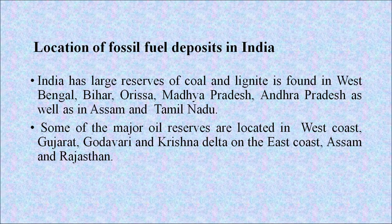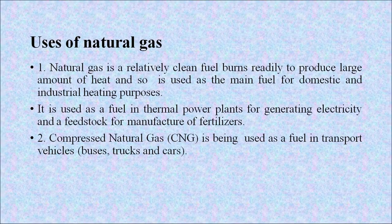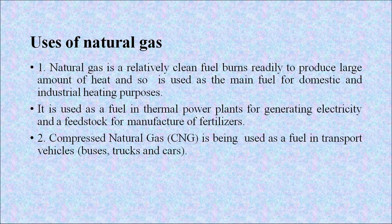Location of fossil fuel deposits in India: India has large reserves of coal and lignite found in West Bengal, Bihar, Odisha, Madhya Pradesh, Andhra Pradesh, Assam and Tamil Nadu. Some major oil reserves are located on the West Coast, Gujarat, Godavari and Krishna Delta on the East Coast, Assam and Rajasthan. Natural gas is a relatively clean fuel that burns readily to produce large amounts of heat, and is used as the main fuel for domestic and industrial heating. It is also used as a fuel in thermal power plants for generating electricity and as a feedstock for manufacture of fertilizers.